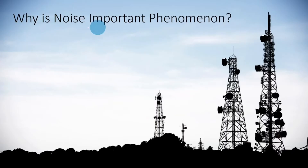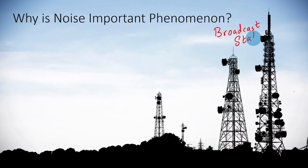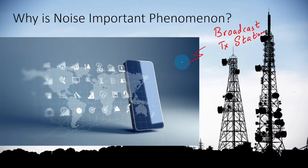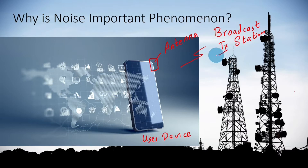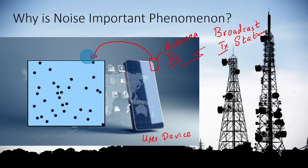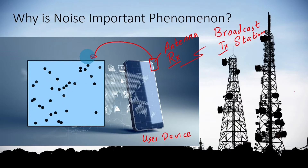Note that noise is prevalent in most systems. Let us restrict ourselves to a particular system — a communication system. Here we have a broadcast station transmitting a signal wirelessly to a user device, which is a cell phone with an antenna. The electromagnetic wave transmitted from the broadcast station is received at the receive antenna of the user device. Within this receive antenna there is a random movement of electrons which are agitated and they dissipate unwanted energy — this is a random process.